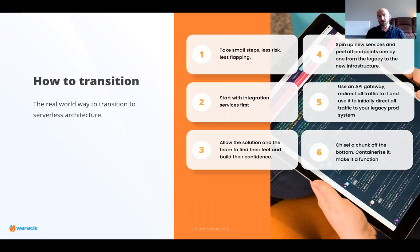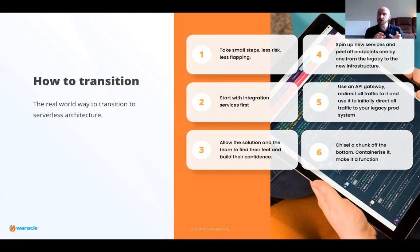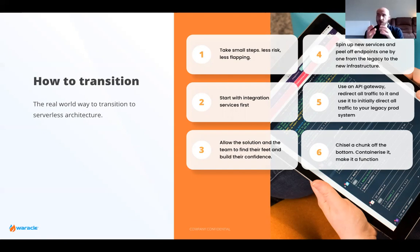How do we transition to this new world? Very simply: take really small steps, lower risk, do proof of concepts, and start with integration services. Serverless is really good at doing an integration and orchestration layer — that's a good place to start because you allow the solution design team to find their feet and build confidence. You can spin up new services, peel off endpoints from your legacy architecture, set them behind an API gateway, and route traffic either via AB routing or progressively from your legacy to your new architecture — one at a time, very gradually. Chisel a chunk off, containerise it, and deploy it in your serverless architecture.